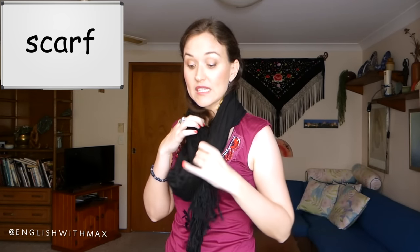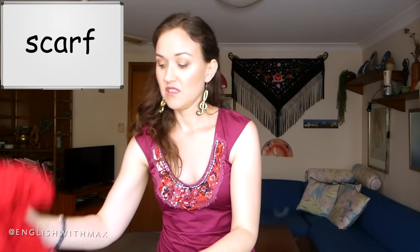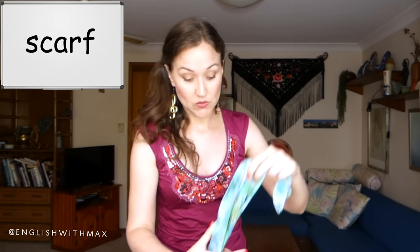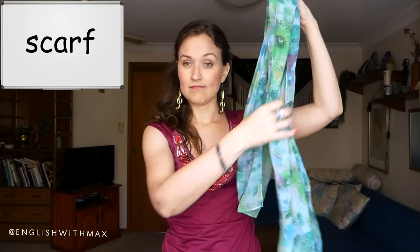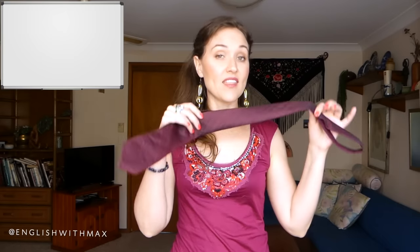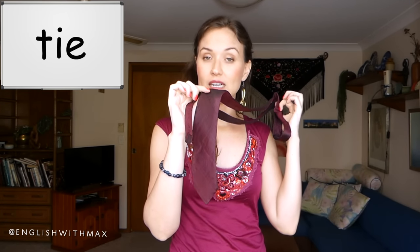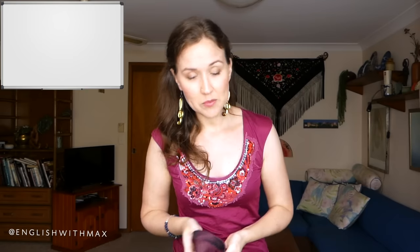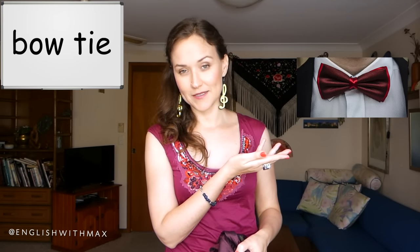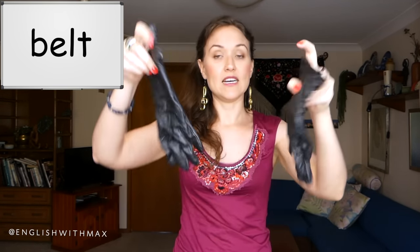And how could we talk about clothes without talking about some accessories? This here is a scarf. Scarves can also be quite thick, or they can be very thin — all of these are scarves. This here is a tie. One special type of tie is a bow tie. This here is a belt. And these are gloves — one glove, two gloves. Again, you can say a pair of gloves.